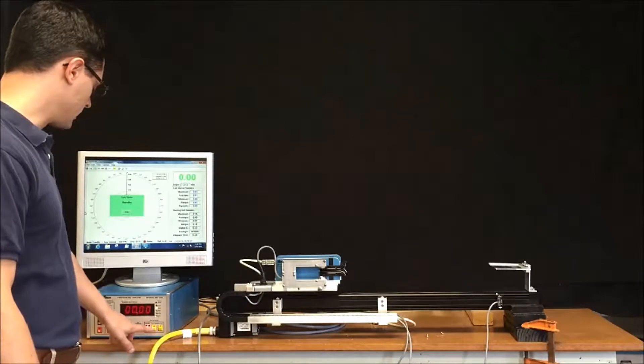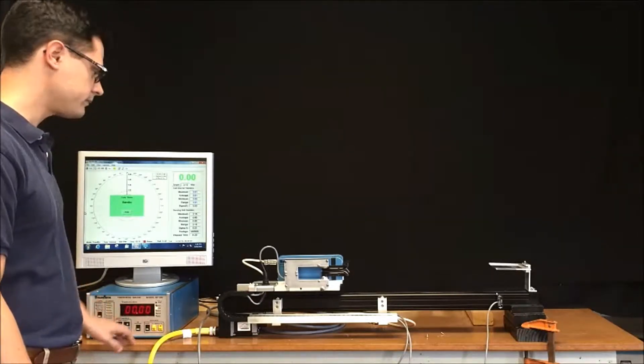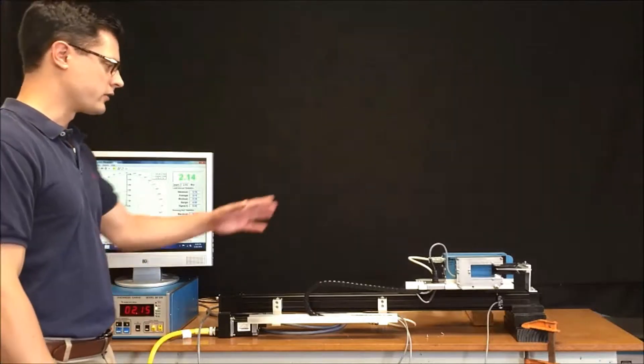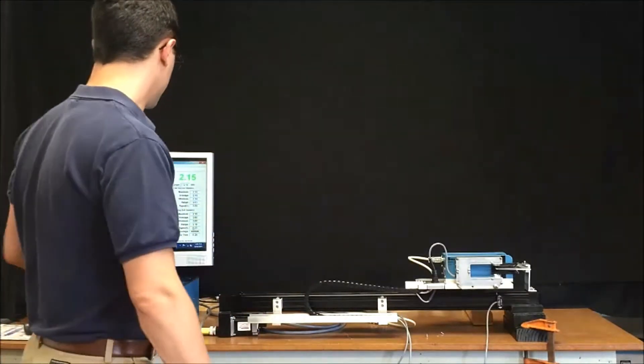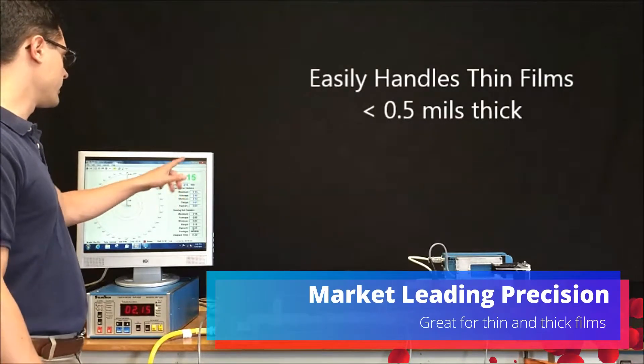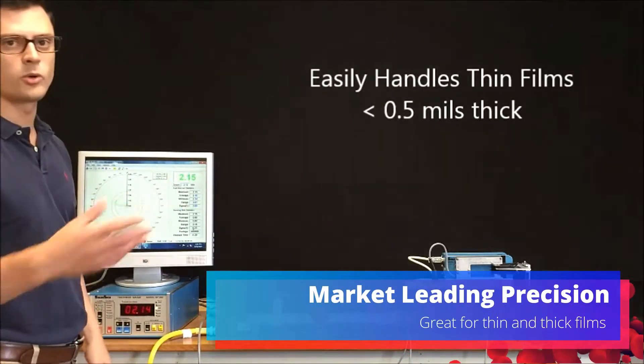So I'm going to go ahead and put the gauge on line. Right now I'm measuring the film. You can see I've got a 2.15 mil thick material and I'm measuring to 10 thousandths of an inch or 0.01 mils.